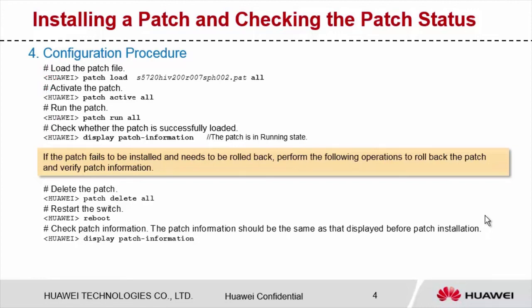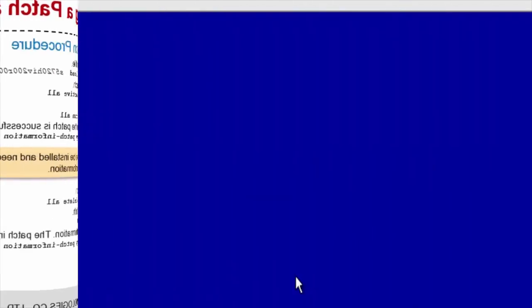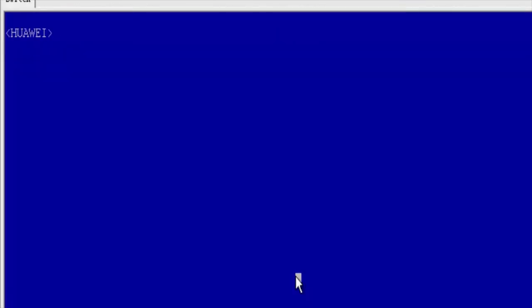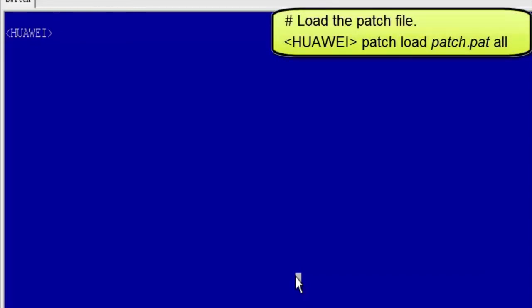Note that if the patch fails to be installed and the patch status is abnormal, you need to roll back the patch. The patch rollback procedure is simple — delete the patch and then restart the device. I will not introduce how to roll back a patch in this course. Now I will demonstrate how to install a patch on a device. Load the patch file.